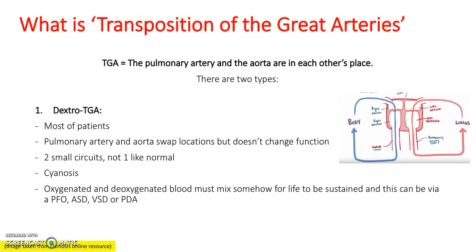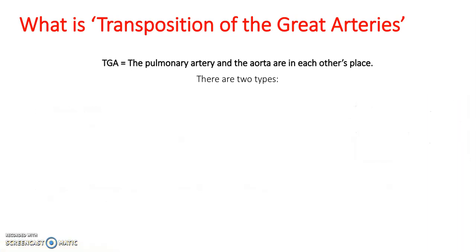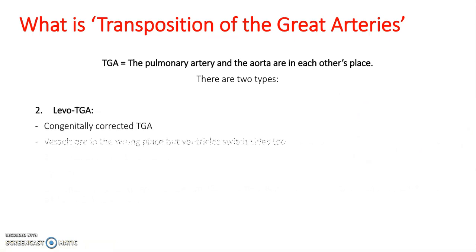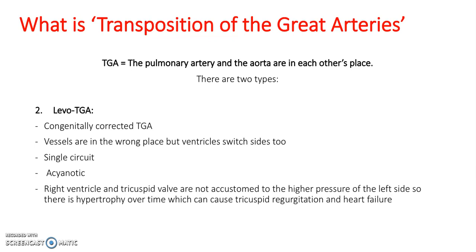The other type is levo-TGA, which is congenitally corrected TGA. Vessels are in the wrong place but the ventricles also switch sides, creating a single circuit. It's acyanotic. The right ventricle and tricuspid valve are not accustomed to the higher pressure of the left side, so there's hypertrophy over time which can cause tricuspid regurgitation and heart failure.